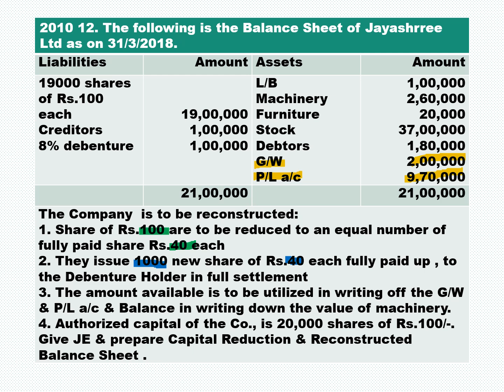Any remaining balance is to be written down from the value of machinery as depreciation. Regarding authorized capital of the company — 20,000 shares of rupees 100 each — please ignore this information; it is not important for our solution. Give journal entry, prepare capital reduction account and reconstructed balance sheet.